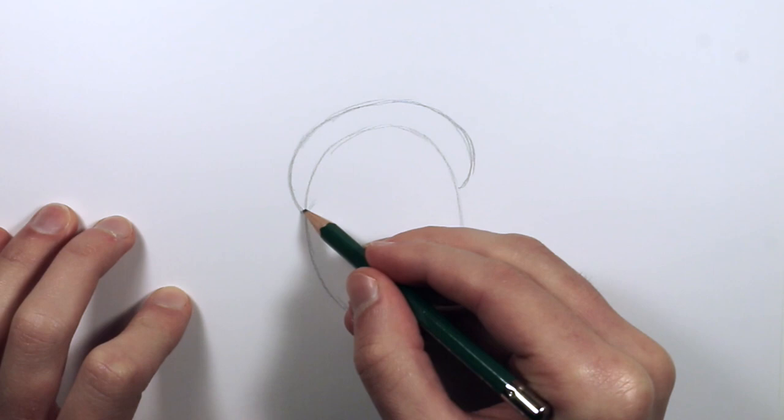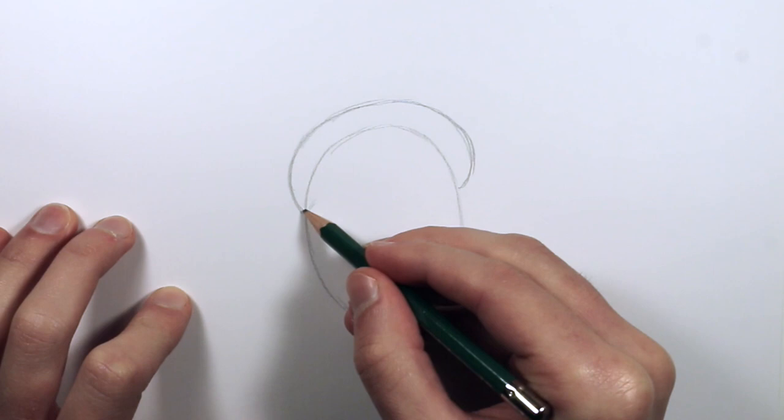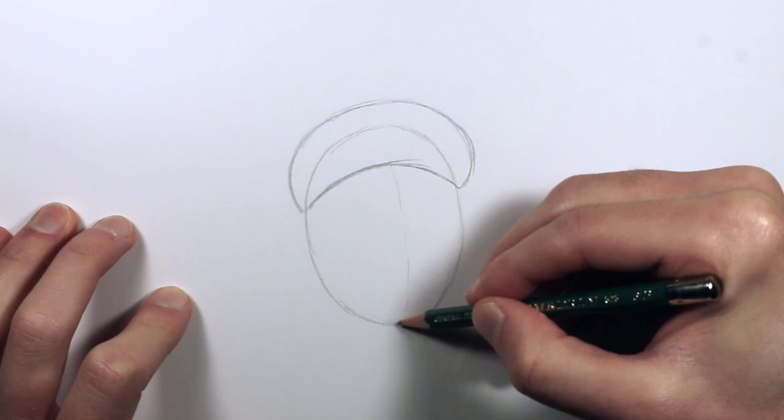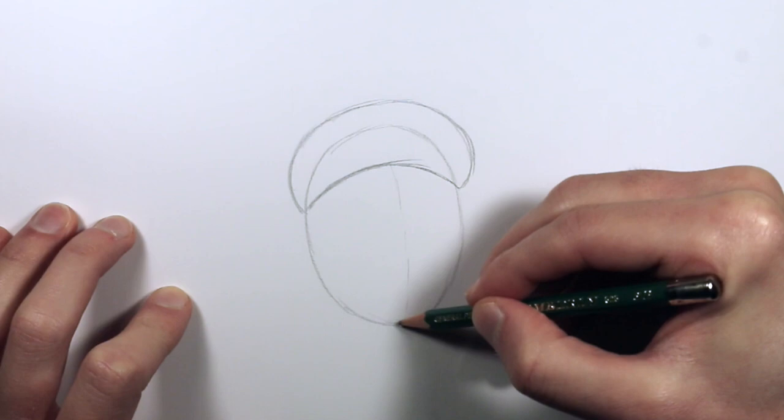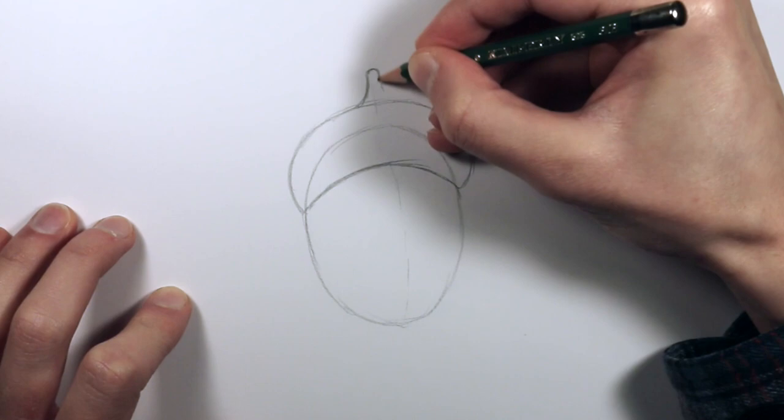And then we're gonna sketch an arc going in this direction. So it kind of folds above the circumference of the acorn. And then up here, we're going to draw its little stem that comes out.